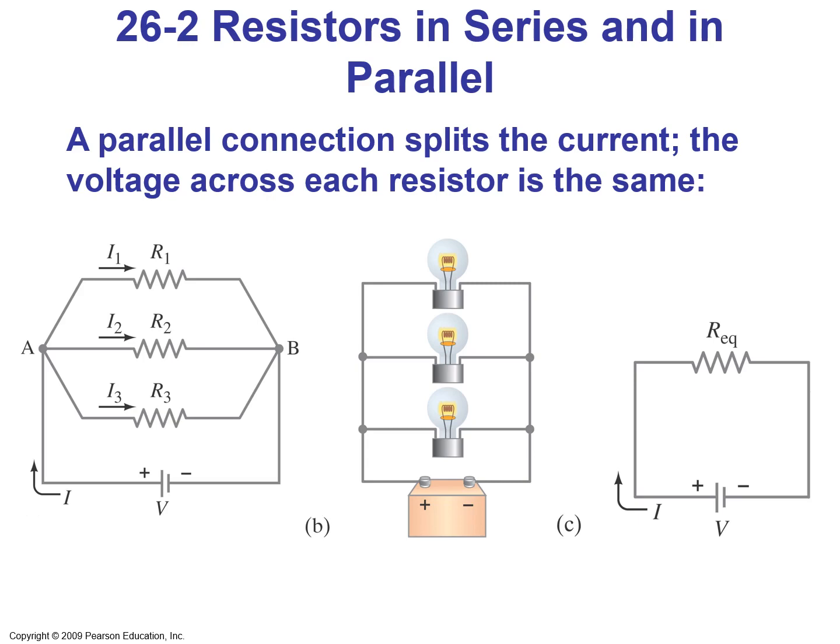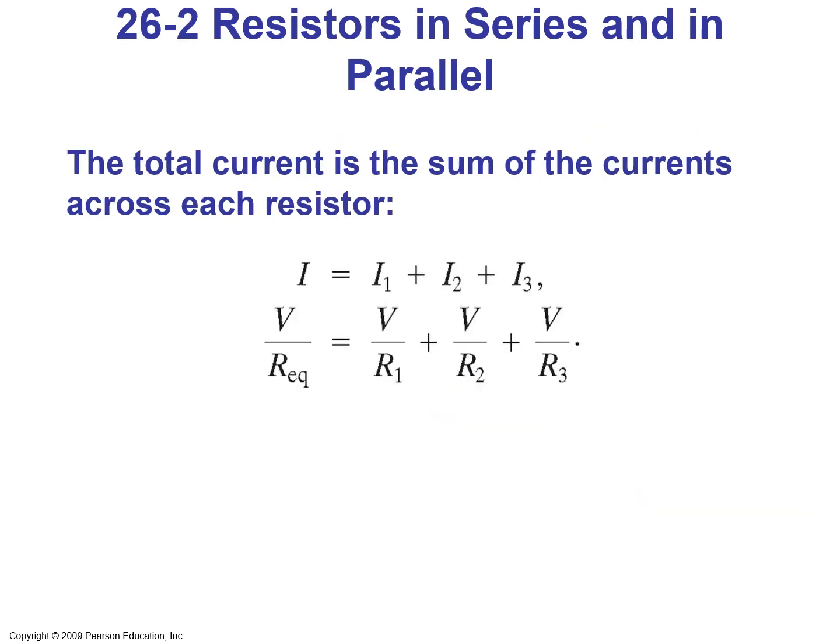We can think of this situation as three lamps connected in parallel to a single battery. For this configuration, we have an equivalent resistor replacing the parallel combination. The total current is the sum of I1 plus I2 plus I3. Using Ohm's law, 1 over R_eq equals 1 over R1 plus 1 over R2 plus 1 over R3.